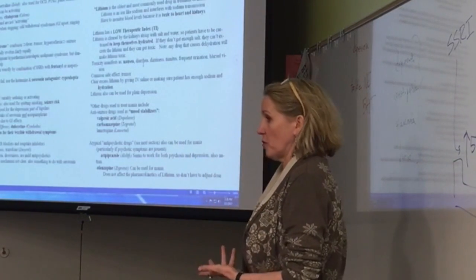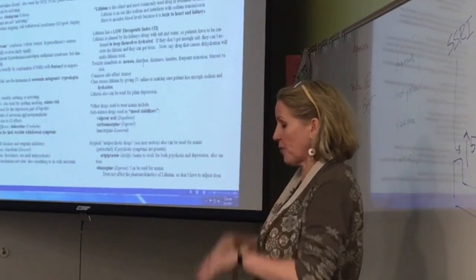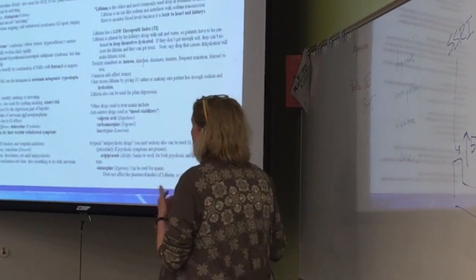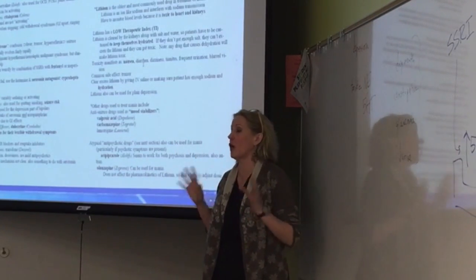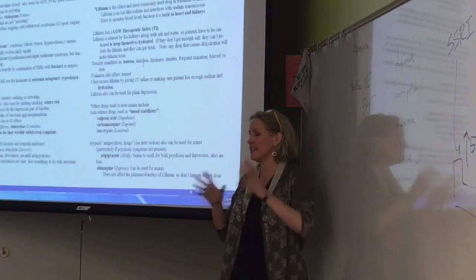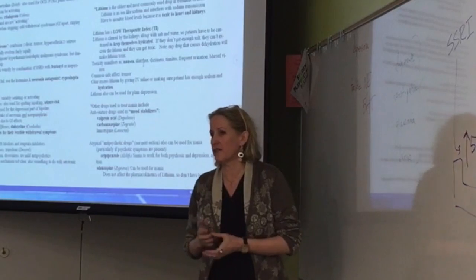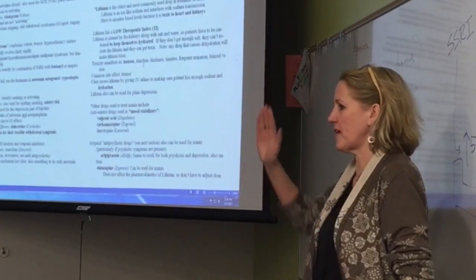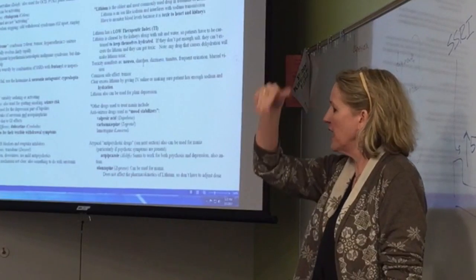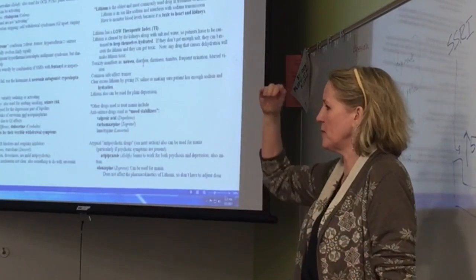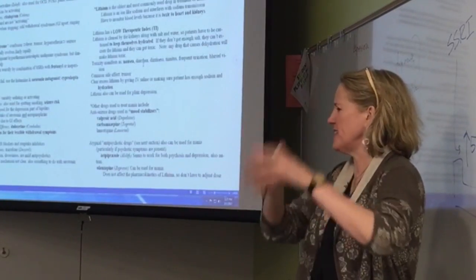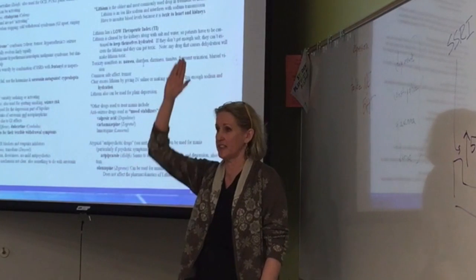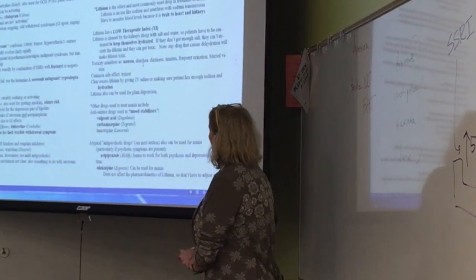If you have bipolar disorder — maybe undiagnosed — and you're depressed, and somebody gives you an antidepressant, there's a good chance you'll flip into mania. Van Gogh was a famous example of bipolar cycling: when manic he painted enormously; when depressed he painted nothing. All his paintings were concentrated in specific months — the rest of the year he barely painted.